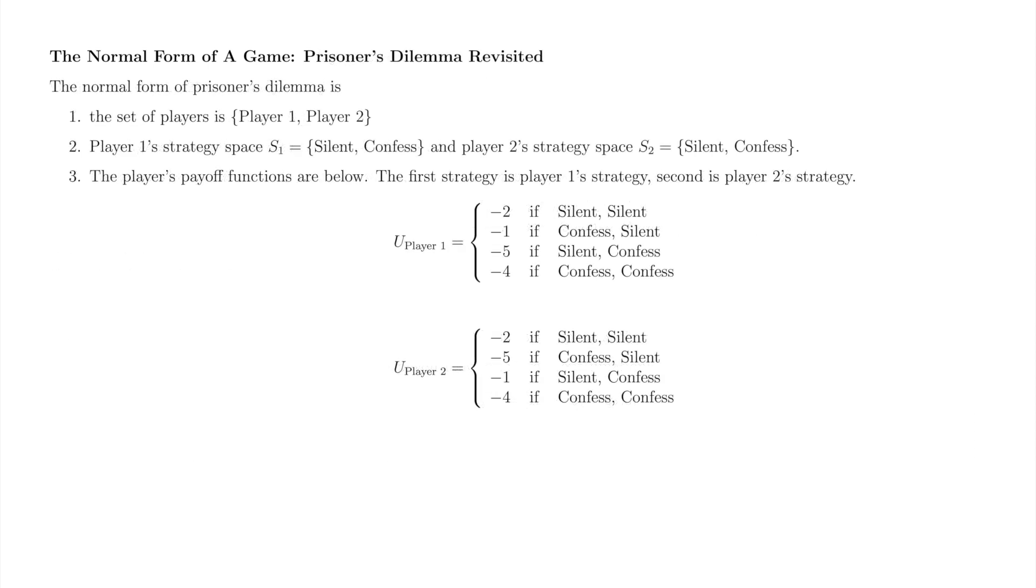For comparison to the matrix, here is the normal form of prisoner's dilemma. The payoff functions are explicitly stated here since a prisoner's payoff function is not implicit the way that profit is the implicit payoff function of a firm.